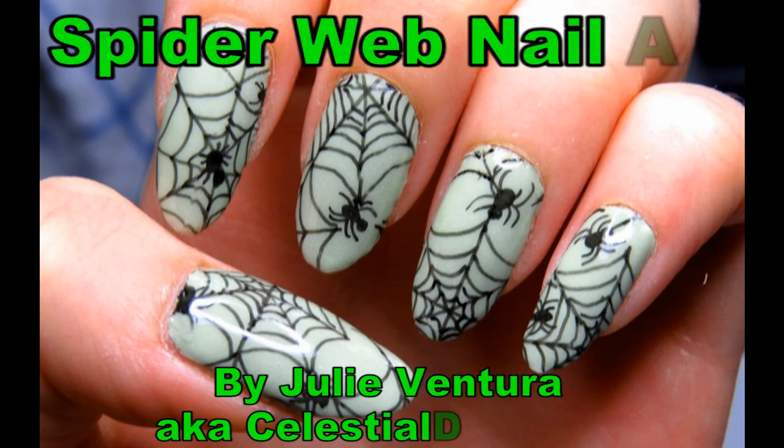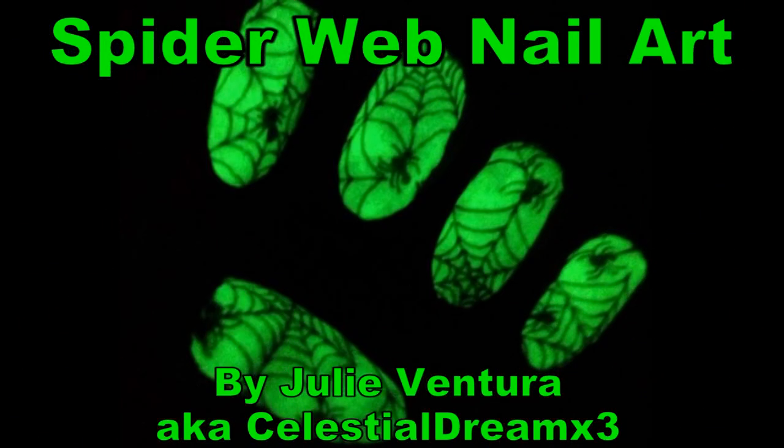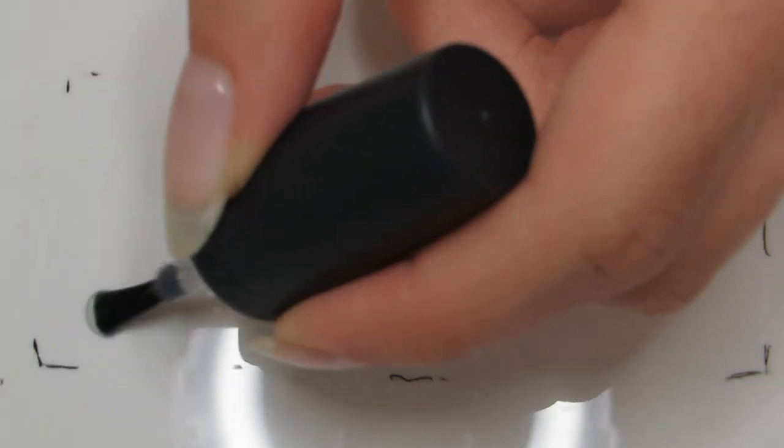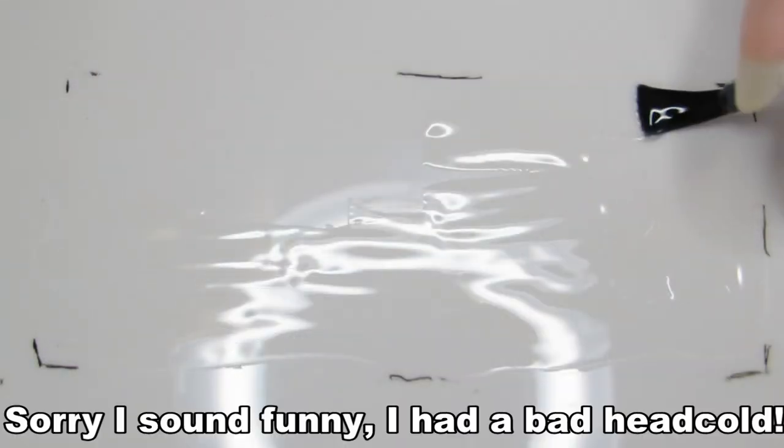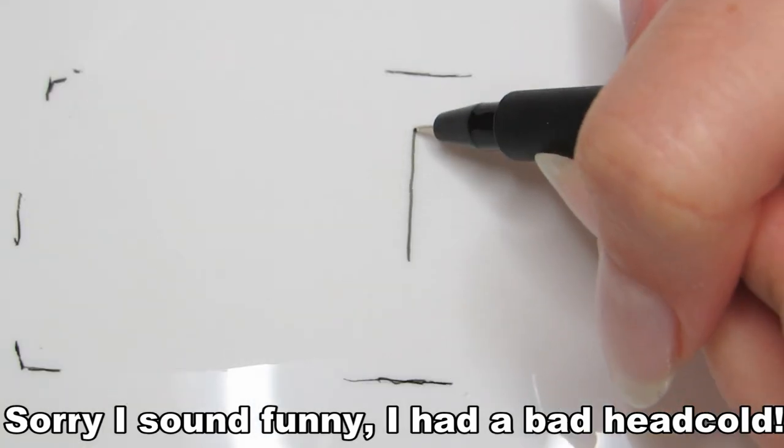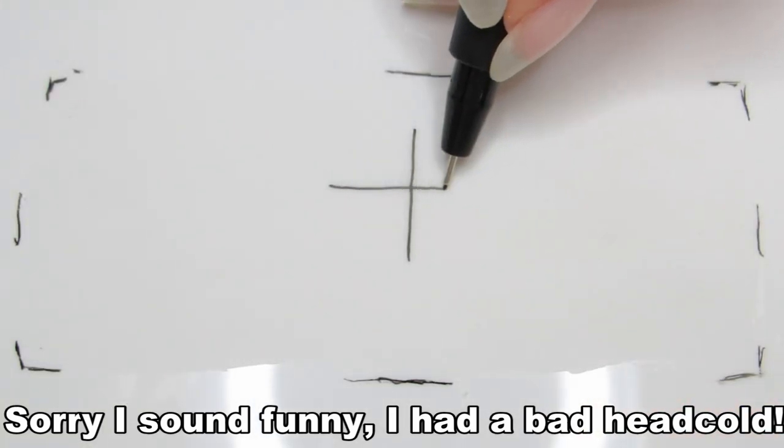What better way to kick off October than to make some glow-in-the-dark spiderweb nail stickers? Begin with a clean, shiny plastic surface. Here I'm using a paint palette. Paint a rectangular shape of matte top coat big enough to cover all your nails.